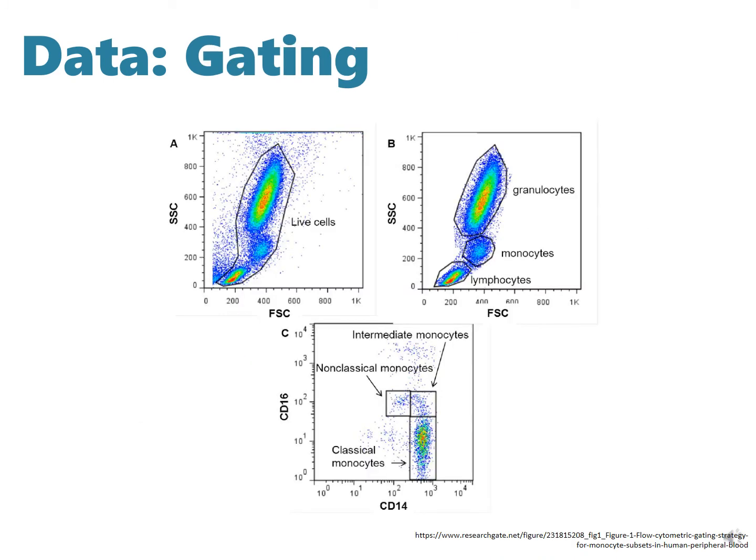The data generated by flow cytometers can be plotted in one or two dimensions to produce a histogram or scatter plot. The regions on these plots can be sequentially separated based on fluorescence intensity by creating a series of subset extractions termed gates. These gates can be produced using software.